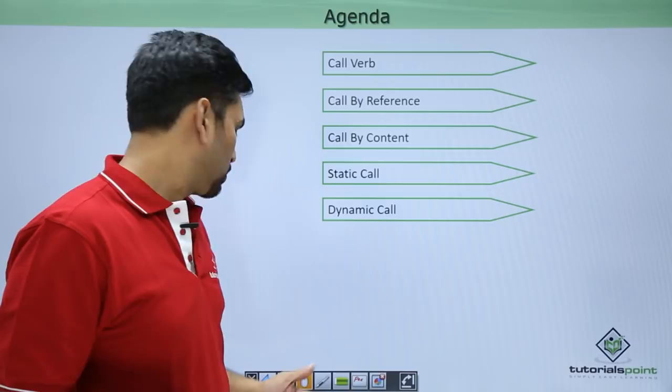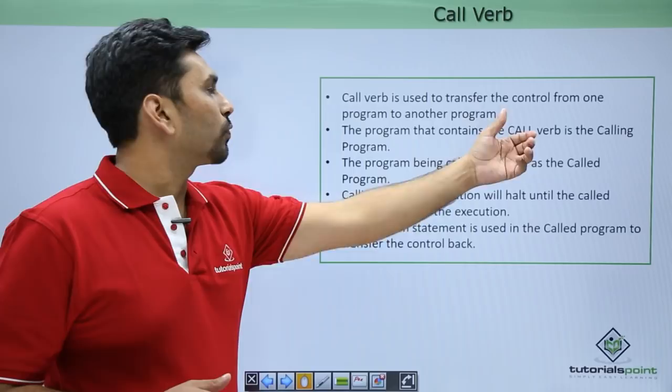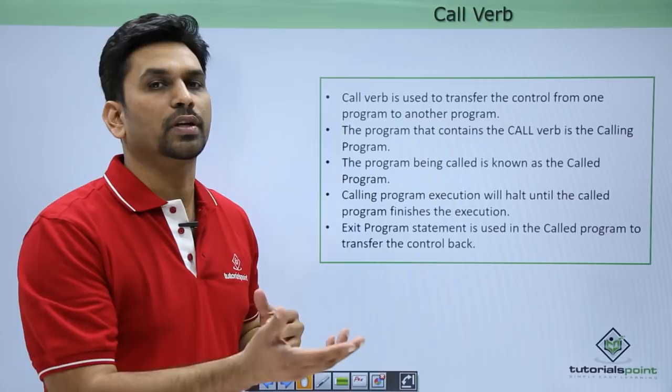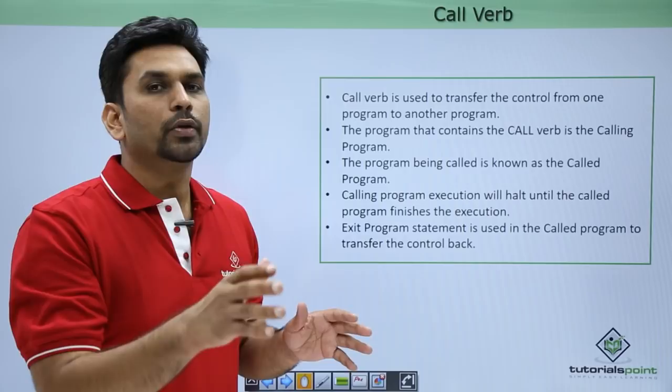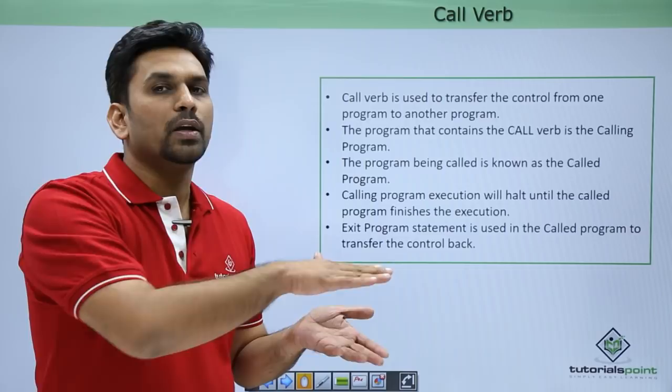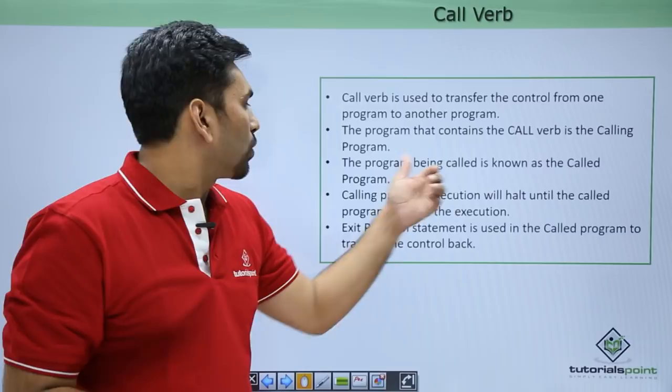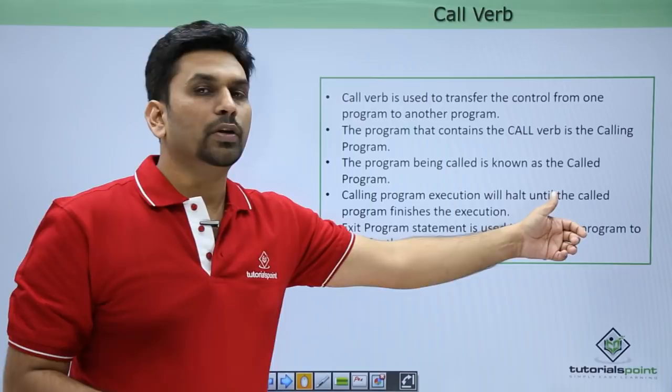The CALL verb is used to transfer control from one program to another program. It is used to call a program and do certain processing — it's like a chain. We are calling from module 1 and calling module 2. Module 2 is the called module and module 1 is the calling program. In module 2 you need to define a linkage section, while in module 1 you just need to give the parameters being passed. The program that contains the CALL verb is the calling program; the program being called is known as the called program. Calling program execution will hold until the called program finishes execution.